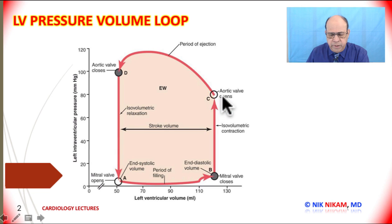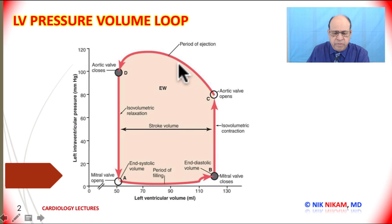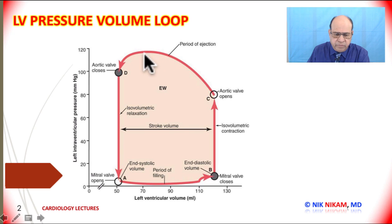When the aortic valve opens at point C, the ventricle begins to eject blood into the aorta. As a result, the left ventricular volume begins to decrease, but at the same time the pressure increases along with the aortic pressure.